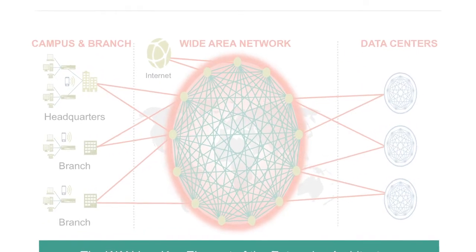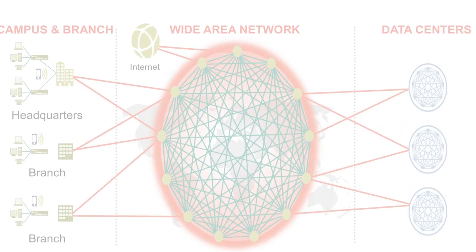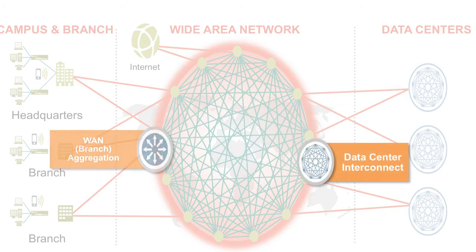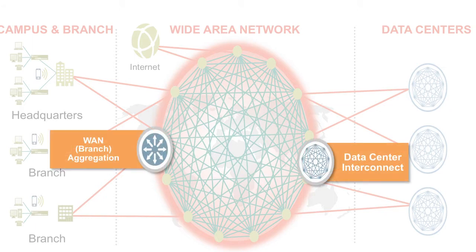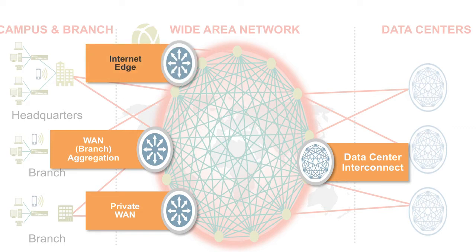The key WAN touchpoints of your enterprise network are data centers, branches, campuses, dispersed geographical locations, access to public internet, remote employees, and partners.